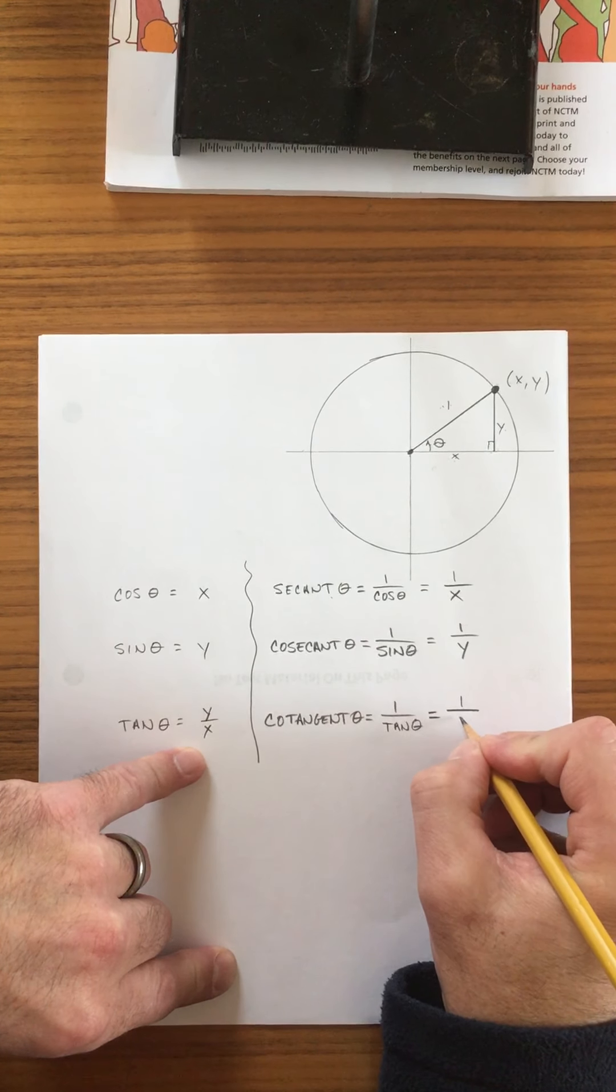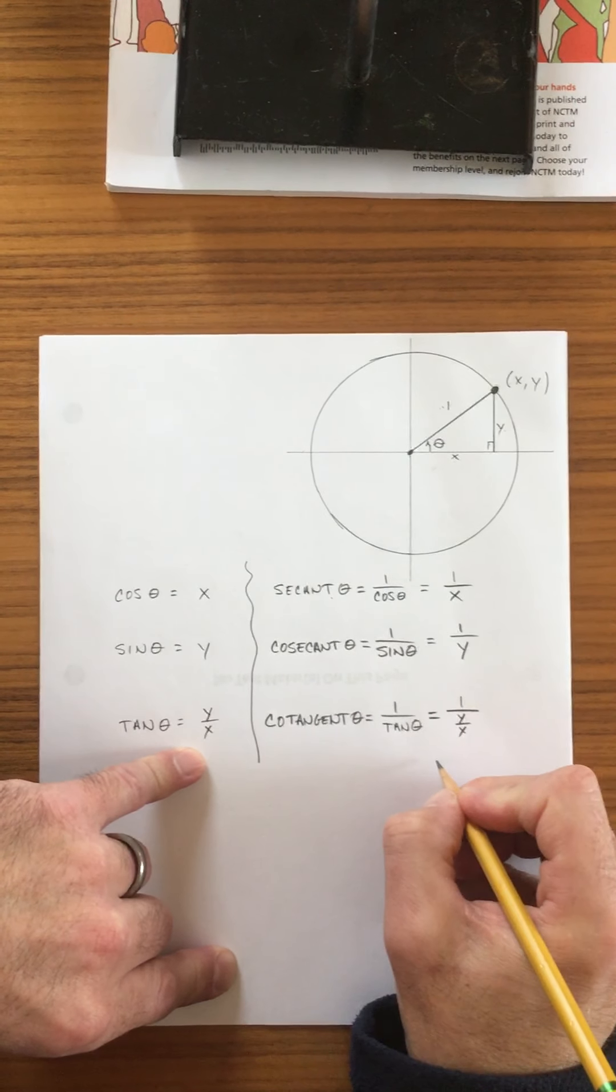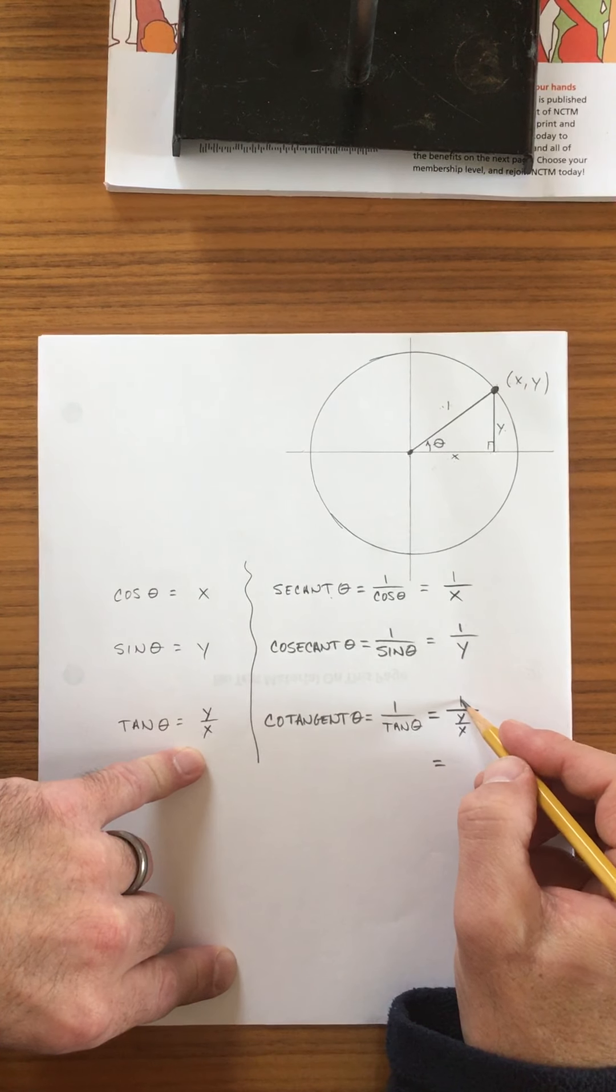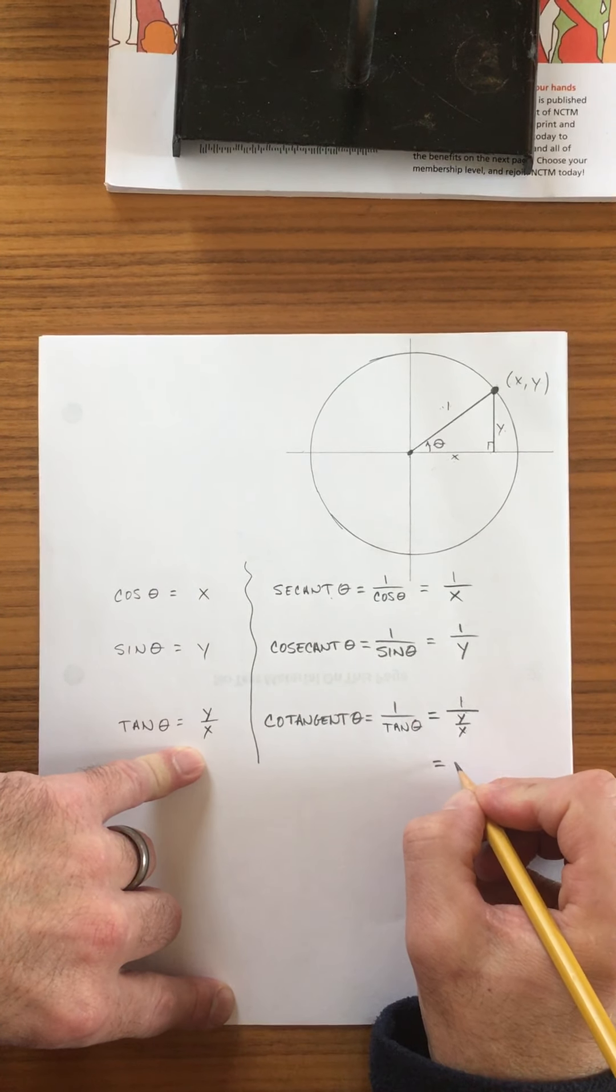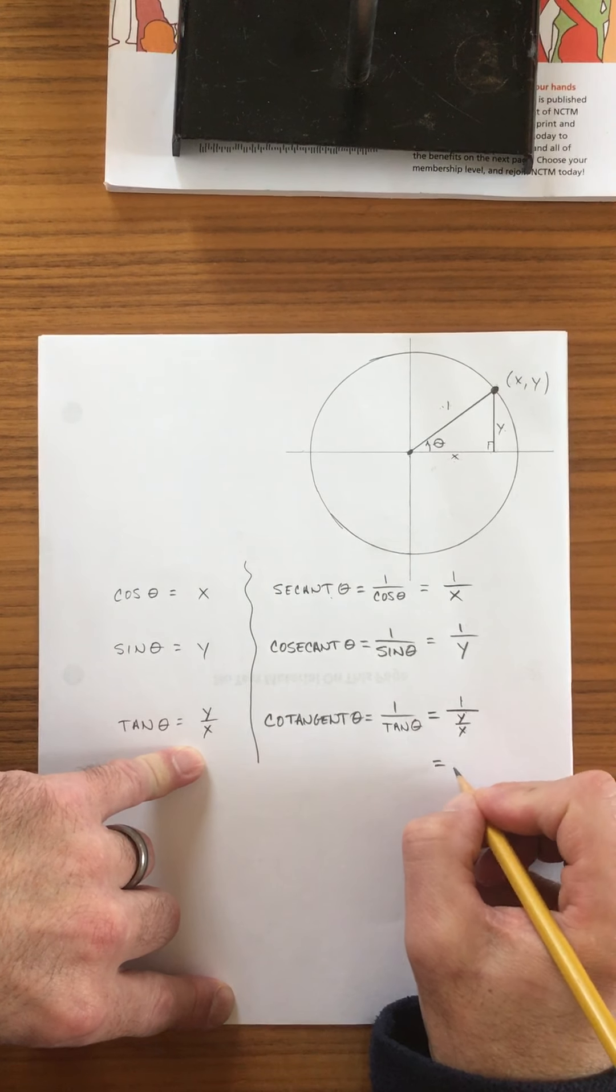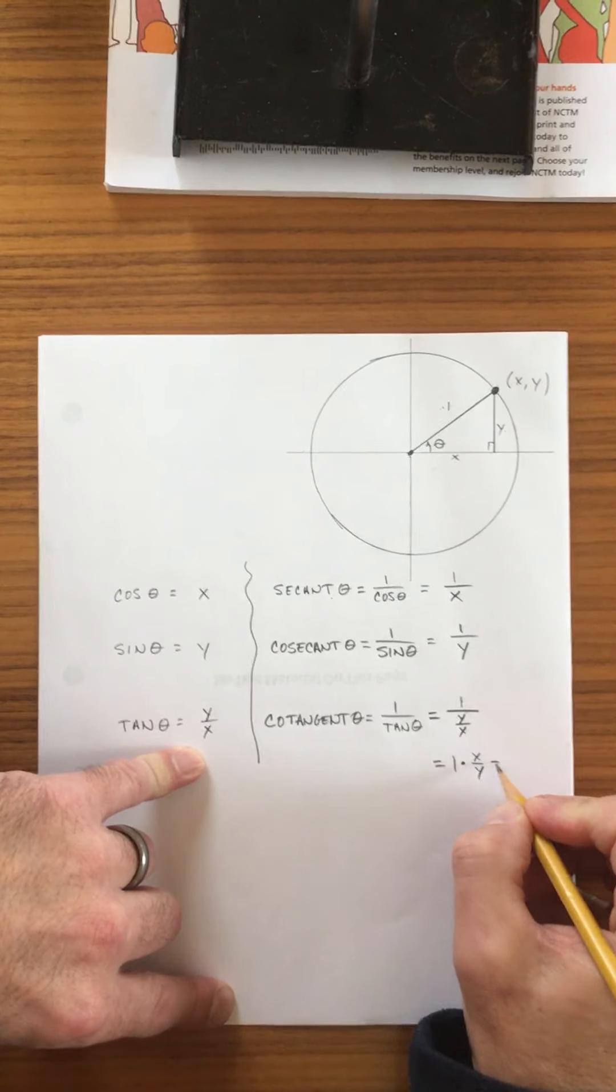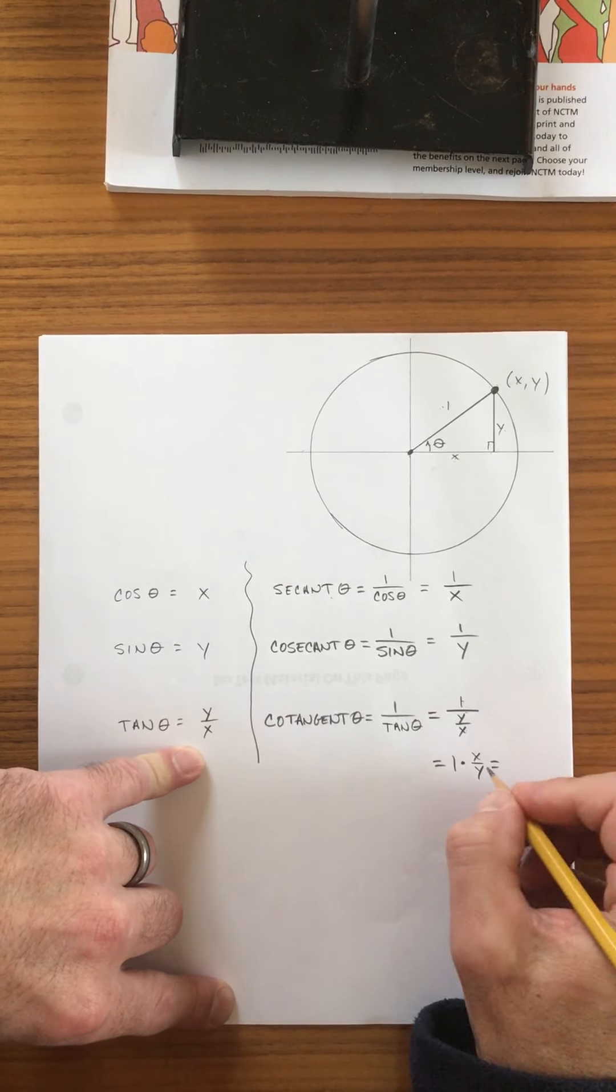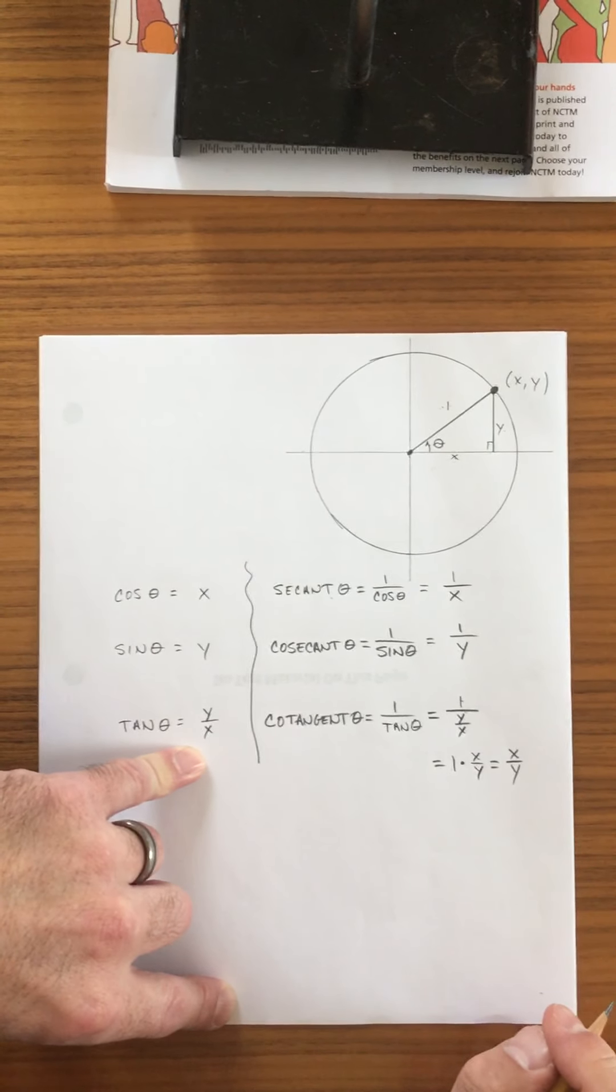And so this would be one over y over x. And we know that whenever you have a number divided by a fraction, it's the same as multiplying by the reciprocal. And so one times the reciprocal, and of course, this just equals x over y.